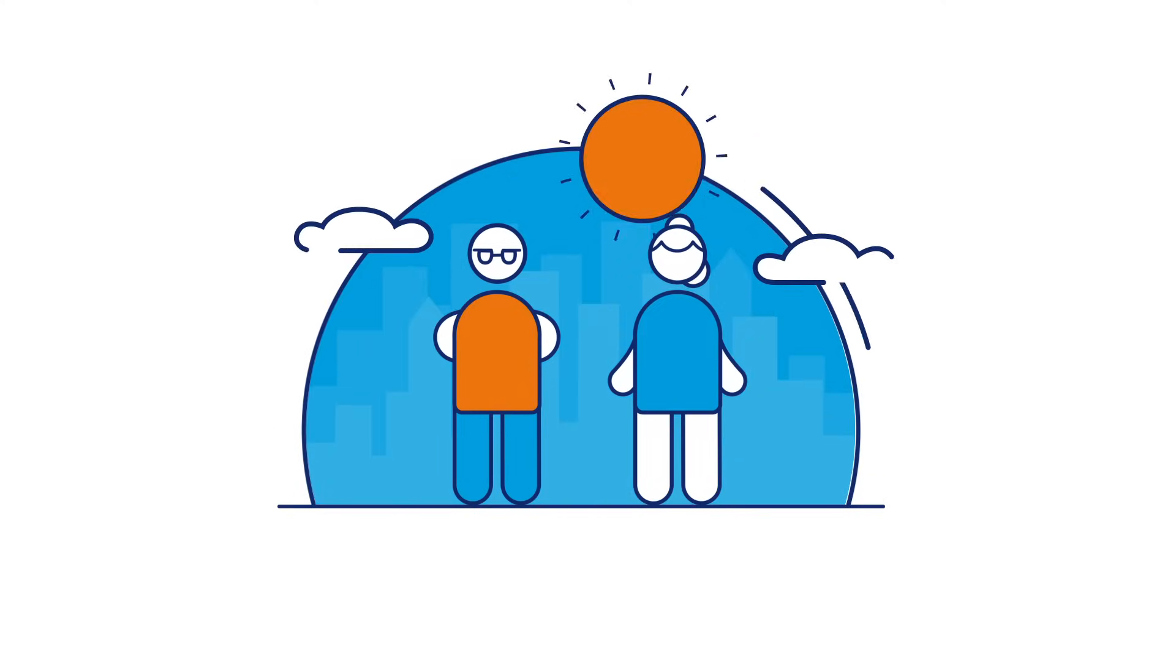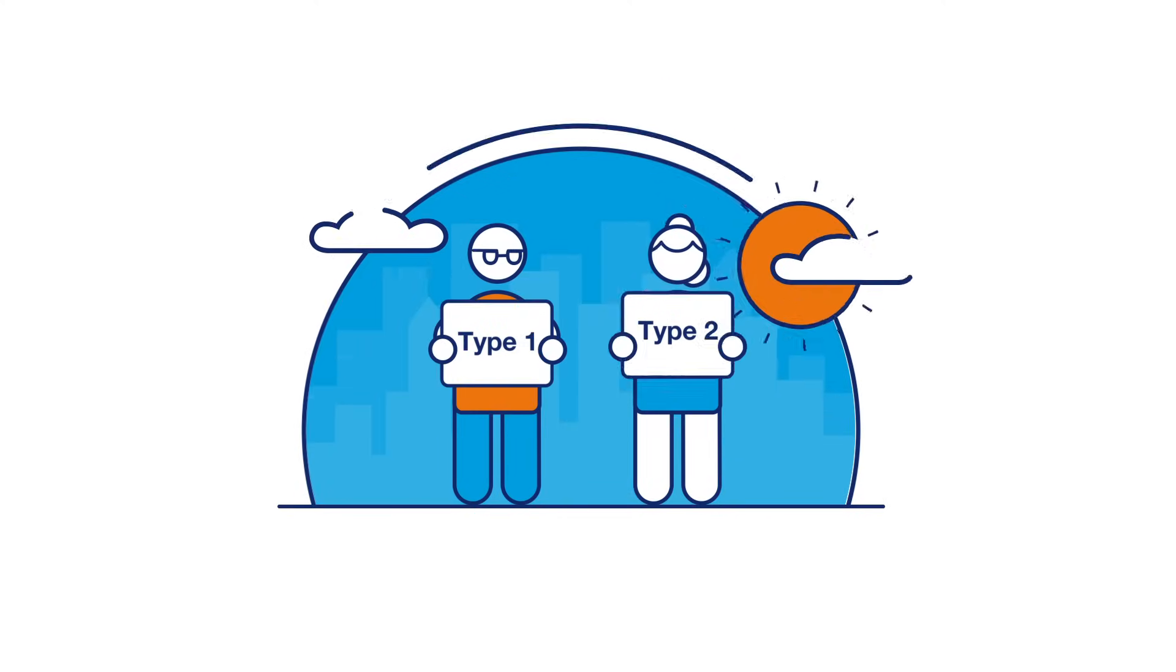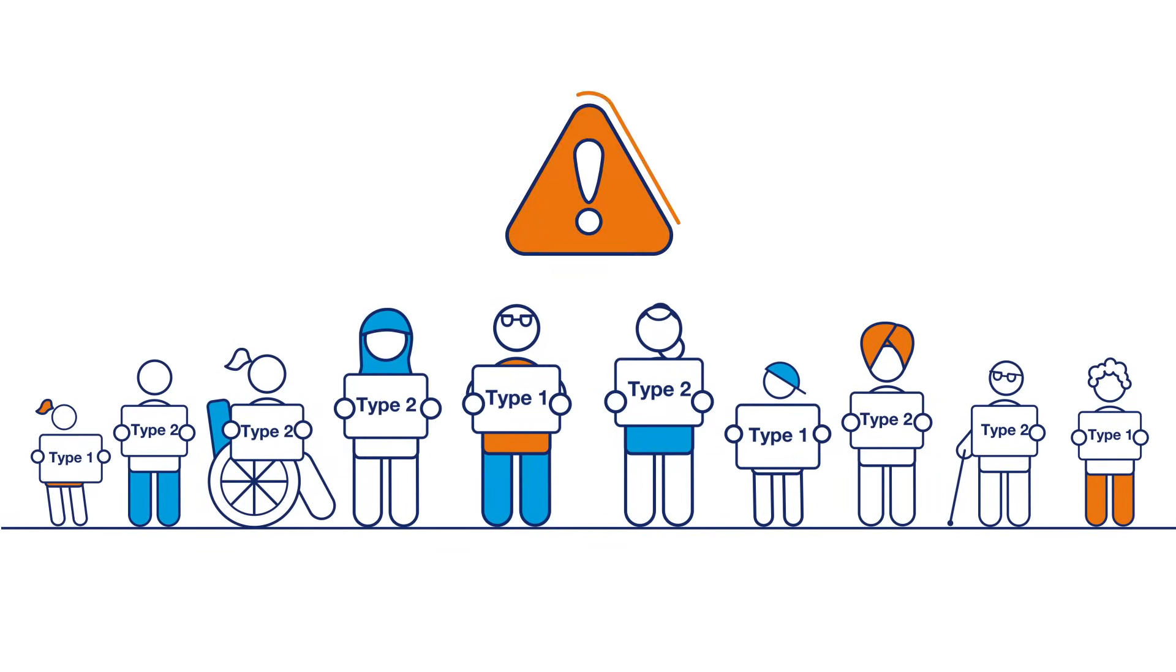There are two main types of diabetes: Type 1 and Type 2. They're different conditions but they're both serious.